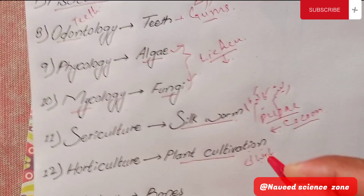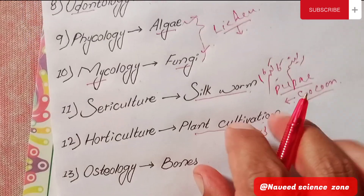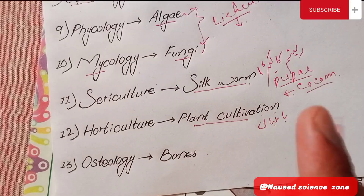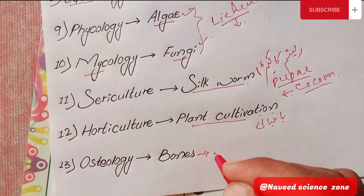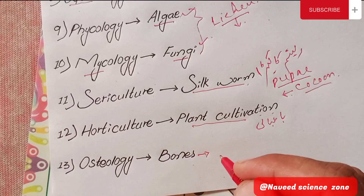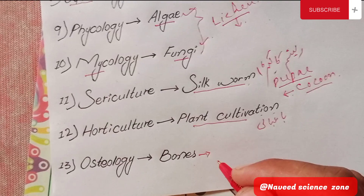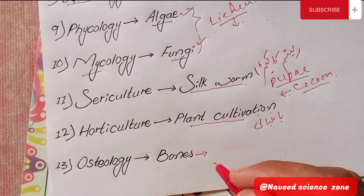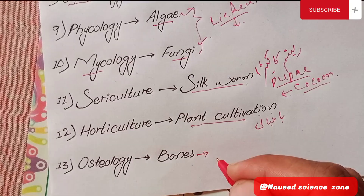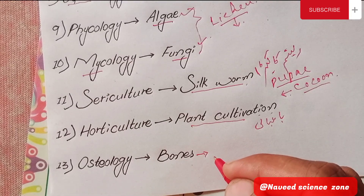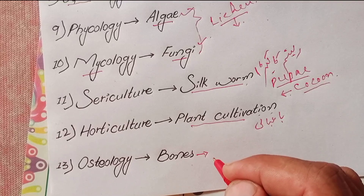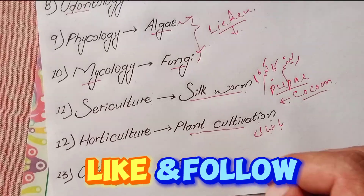The last branch is Osteology, which is the study of bones. Osteocytes are bone cells. Chondrocytes are also discussed — these are cartilage cells. Osteology covers the study of bone cells and their structure.